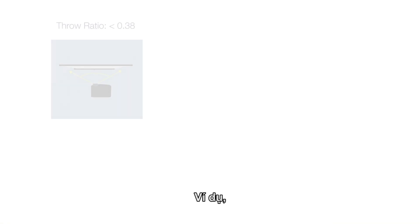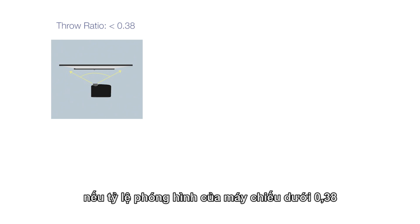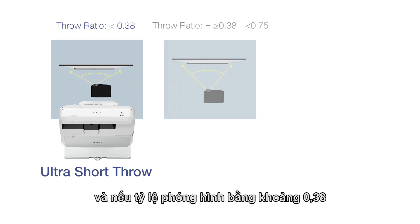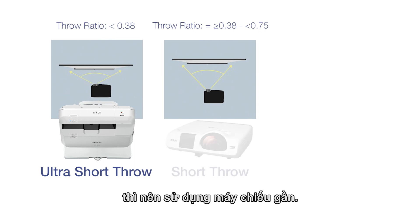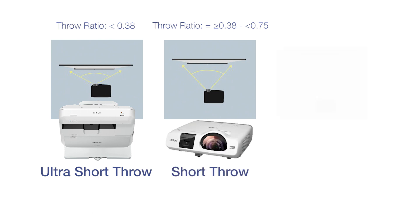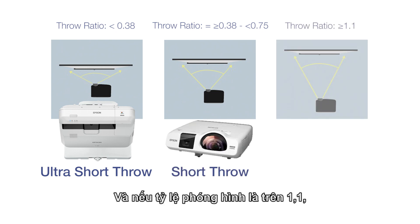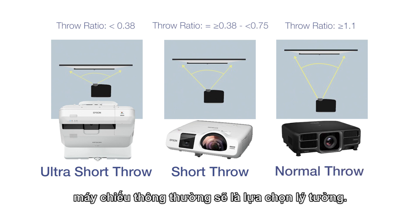For example, if the projector throw ratio falls below 0.38, an ultra-short-throw projector will be very suitable. If the throw ratio is about 0.38 but less than 0.75, a short-throw projector is recommended. And if the throw ratio is beyond 1.1, a normal projector will be the ideal choice.